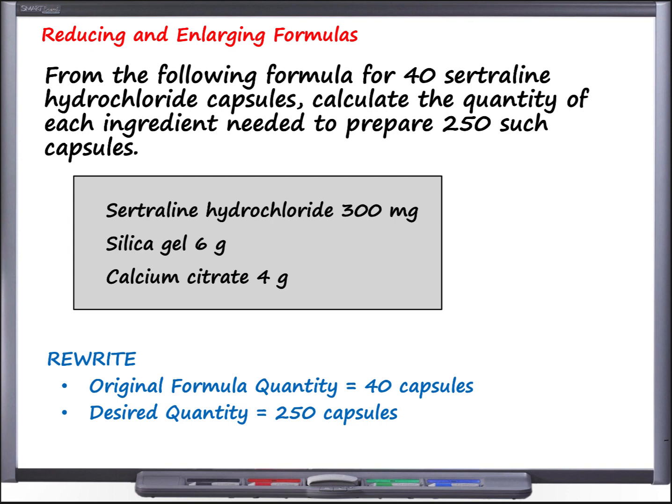Several clinical guidelines have also described a role for SSRIs in treating childhood depression. In addition, SSRIs like sertraline are considered first-line therapy for childhood anxiety disorders that require drug treatment. In this formulation, each capsule would contain 7.5 milligrams of sertraline, which is a lower strength needed for a pediatric patient, and is one that is not commercially available from the manufacturer, justifying why a pharmacist might need to compound this product. The formula to prepare 40 capsules states to use sertraline hydrochloride 300 milligrams, silica gel 6 grams, and calcium citrate 4 grams. Our original formula quantity is 40 capsules, but our desired quantity is 250 capsules. This is an example of wanting to enlarge a formula.